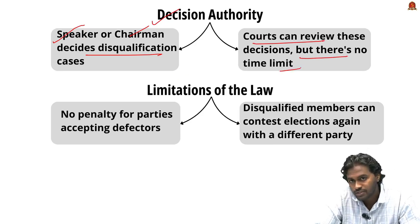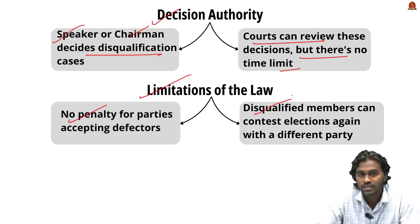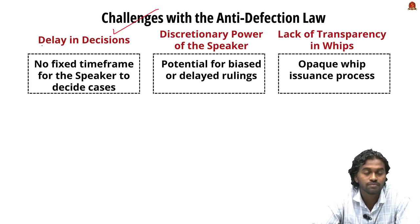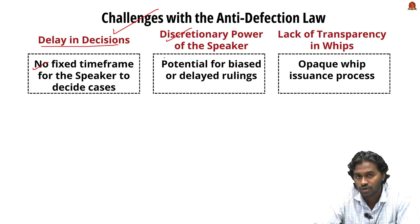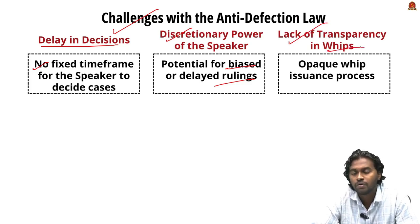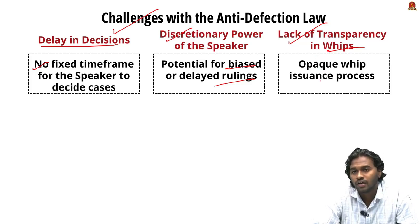The present law has two major limitations: there is no penalty for parties accepting defectors, and disqualified members can contest elections again with a different party. Key challenges include delay in decisions — no fixed timeframe for the Speaker to decide disqualification cases; discretionary power for the Speaker — potential for delayed or biased rulings; and lack of transparency in Whips. The Whip is a position within a political party that maintains discipline among its members, and the opaque process of issuing Whips can lead to disputes and ultimately defection.